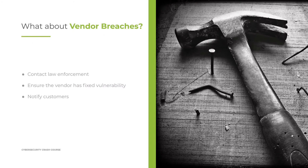What do you do when your vendor has a breach that affects you? First of all, if they have not already, you should contact law enforcement. In some cases, even if they have, it may still be required for your organization to also contact law enforcement. HIPAA, for example — if your vendor has a breach of your PHI, you are required to report that to OCR, the Office of Civil Rights, within a certain time period.